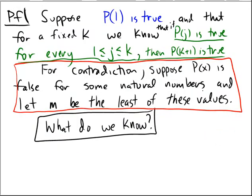Okay, we're going to proceed by contradiction. So, suppose the blue one first, condition 1 was that P(1) is true, and then further suppose that for a fixed k, we know that if P(j) is true for every j between 1 and k, then we know that we can conclude P(k+1). For the sake of contradiction, we're going to say that P(n) is not true for all natural numbers. So, it's false for some natural numbers, and we're going to let M be the minimal criminal, the least of these values for which it's false.